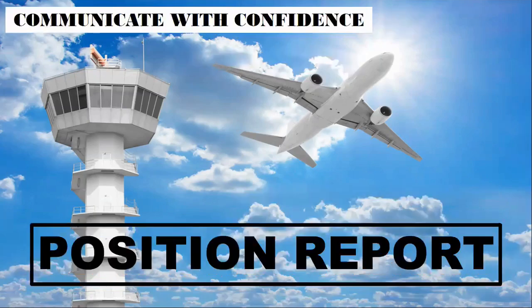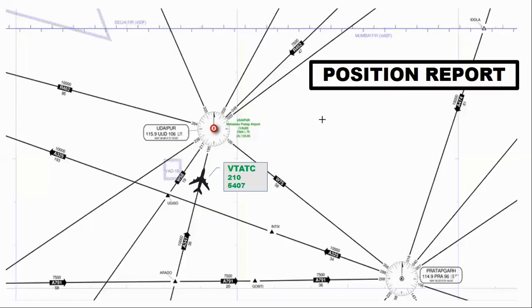A position report in aviation is a communication made by a pilot to air traffic control to provide accurate and essential information about the aircraft's current position, altitude, heading, and other relevant details. It is crucial for maintaining safe and orderly air traffic flow, especially in areas with limited radar coverage or when flying in remote regions.